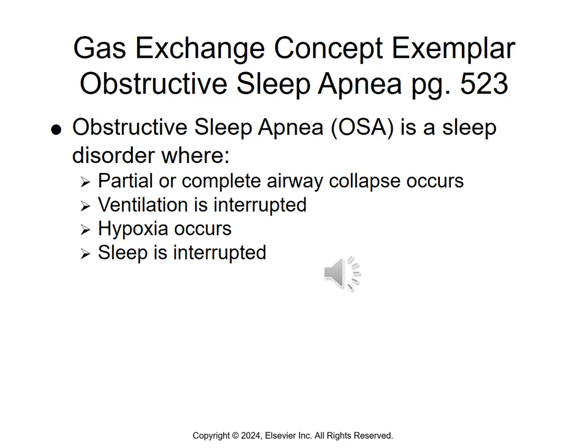These blood gas changes stimulate neural centers in the brain to promote the patient to awaken, usually after 10 seconds or longer of an apnea period, to correct the obstruction, correct the acidity, and allow for return of regular respiration. Unfortunately, after a patient returns to sleep, this cycle repeats, sometimes as often as every five minutes.